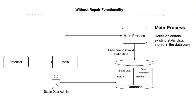In our scenario, the particular incoming message that has been produced on the topic is validated by the main process, but due to some wrong configuration of static data — or because the required static data is missing in the database — the main process is not able to successfully validate that message. Hence, that message ends up in the failed message table in the database.